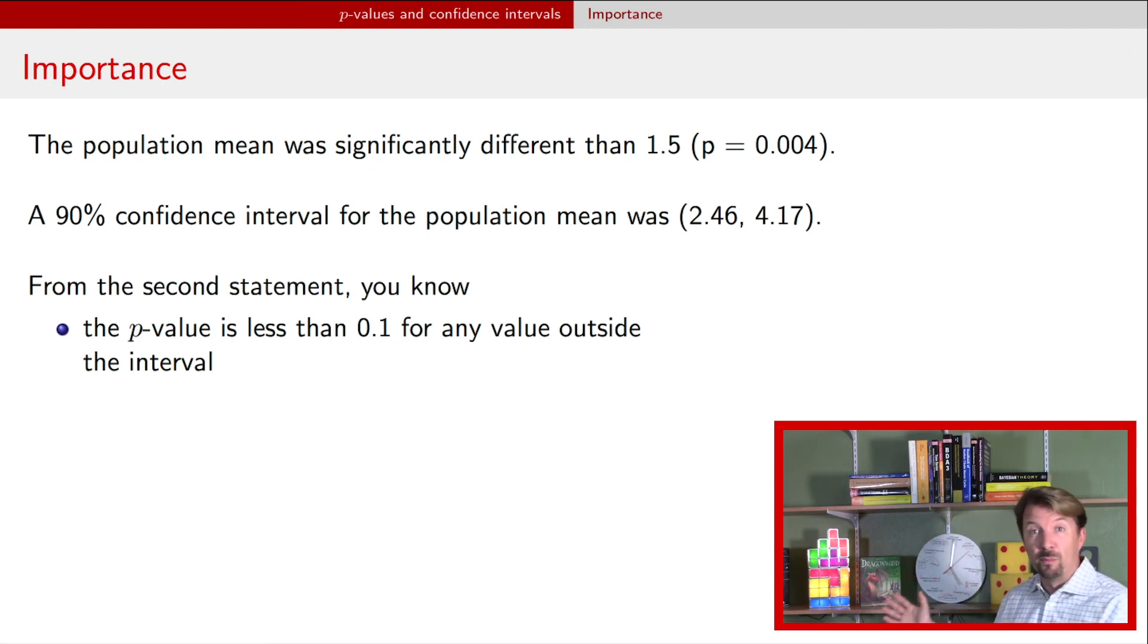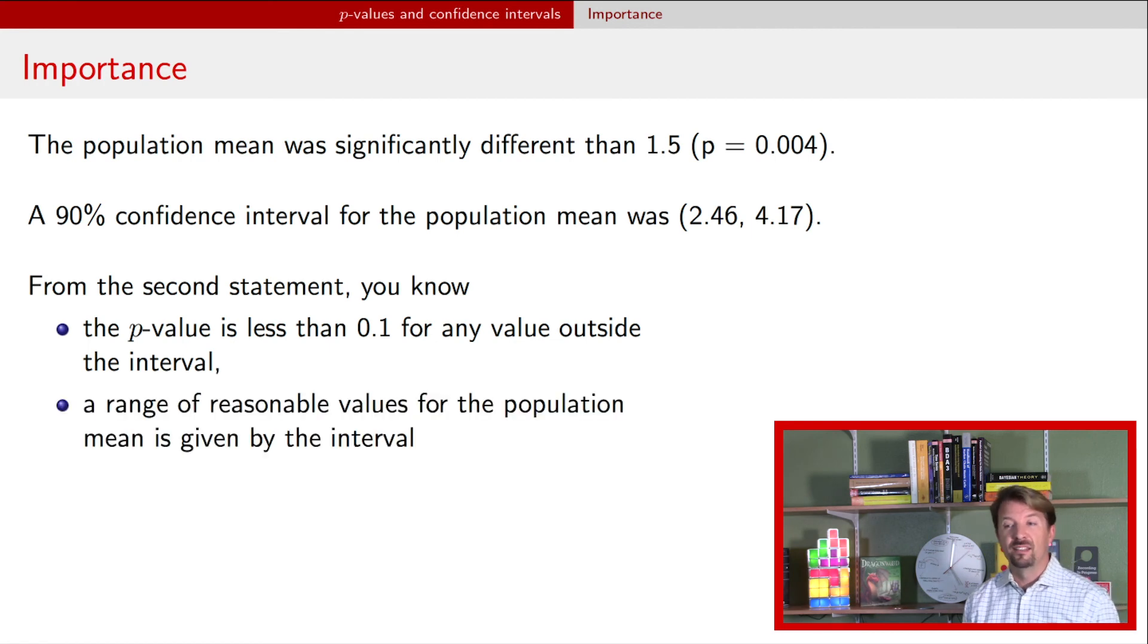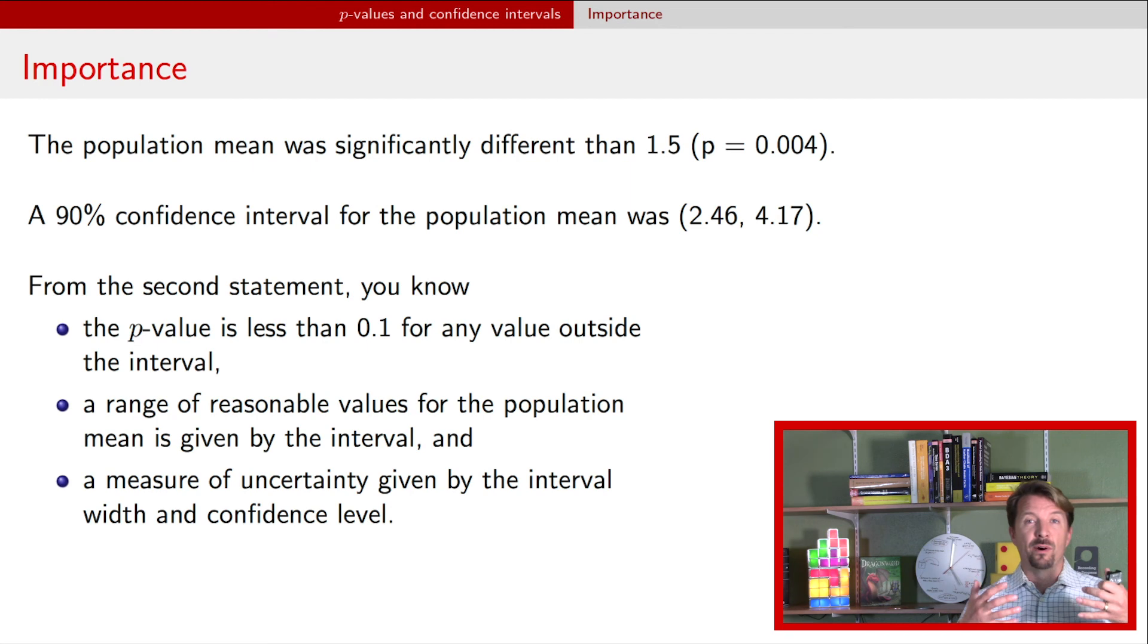But this second sentence then goes up much farther. If I read the first sentence, I'm immediately thinking, okay, great, it's not 1.5, but what is it? And the second sentence tells me that. The second sentence says, here is a set of reasonable values for that population mean. The reasonable values are, say, 2.46 to 4.17. In addition to telling me a set of reasonable values, it also portrays the amount of uncertainty we have because of that interval width and the confidence level. Those two together tell me, give me some idea of what kind of uncertainty we have.